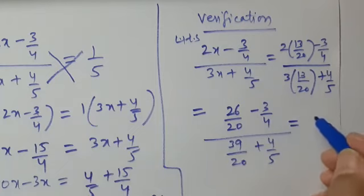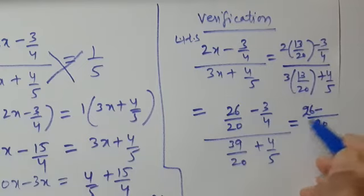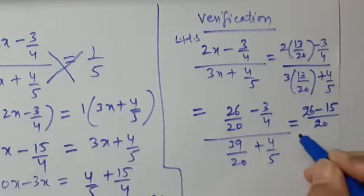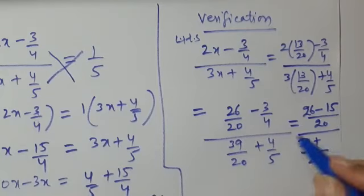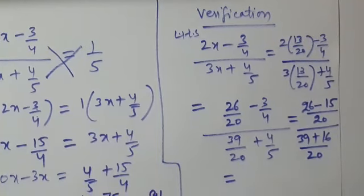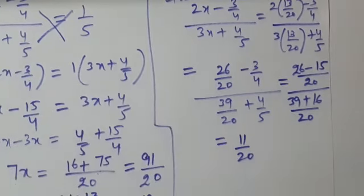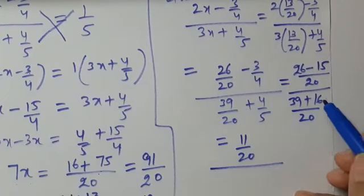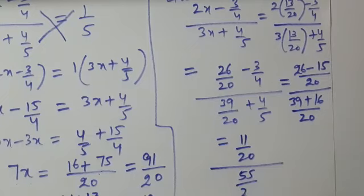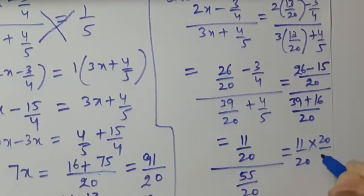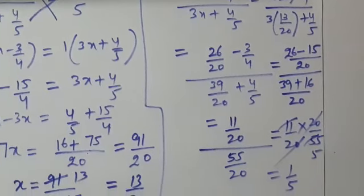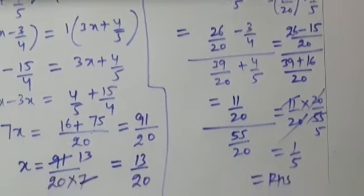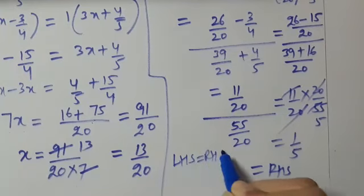In the numerator, taking 20 as LCM: 2 times 13 gives 26, and 5 times 3 is 15, so we get 26 minus 15 upon 20 equals 11 upon 20. In the denominator, taking 20 as LCM: 39 plus 4 times 4 is 16, giving 39 plus 16 equals 55 upon 20. So this equals 11 upon 20 divided by 55 upon 20, which is 11 upon 20 times 20 upon 55. The 20s cancel, and since 11 fives are 55, we get 1 upon 5. Since 1 upon 5 is the right hand side, LHS equals RHS — hence verified.